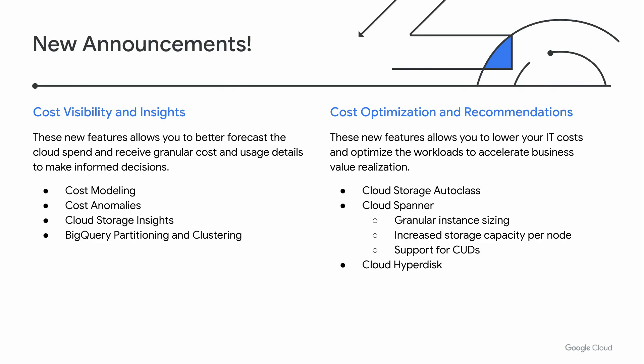Next up is Cloud Spanner, and this team had a lot of great announcements this year. Starting with granular instance sizing, which allows customers to provision one-tenth of the size of a current node at one-tenth of the price — this is a game-changer not only for bigger teams but also for smaller teams to unlock creativity, especially those who are tight on budget. Next in Spanner is increased storage capacity per node, which helps you achieve up to 50% savings on compute costs for storage-intensive workloads. And Cloud Spanner now supports CUDs for one-year and three-year commitments, which helps you save up to 40% compared to on-demand rates.